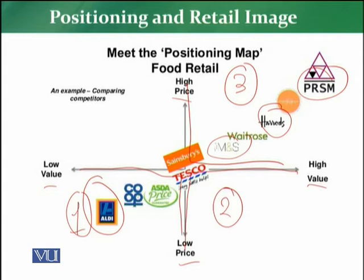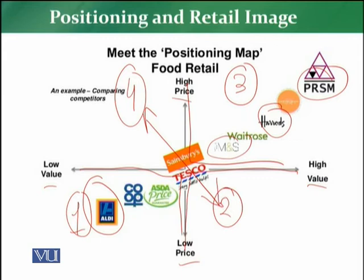These are the stores which offer high value and charge a high price. Then we have the fourth quadrant — stores which offer low value but charge a high price. Of course, this quadrant, like quadrant two, essentially does not exist, because if you are charging high prices you have to offer high value products. If you charge a high price and your product value is low, you will get no turnover, your positioning in the minds of the customer is wrong, and ultimately you will not succeed as a retailer.